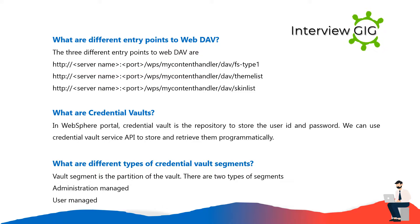The three different entry points to WebDAV are: server-name:port/wps/mycontenthandler/dav/fs-type1, server-name:port/wps/mycontenthandler/dav/themelist, and server-name:port/wps/mycontenthandler/dav/skinlist.